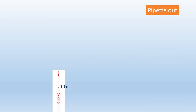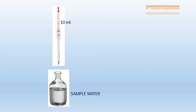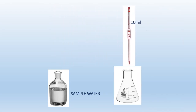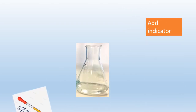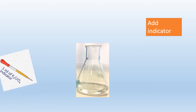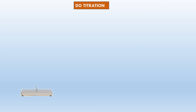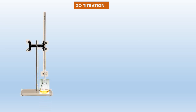Pipette out 10 ml of sample water and add to the conical flask. For Titration 2, the burette is filled with AgNO₃ and it is titrated with the sample water with the indicator. Upon titration, the color changes to reddish brown tinge.